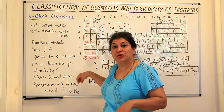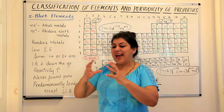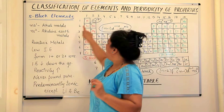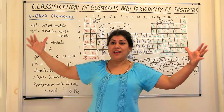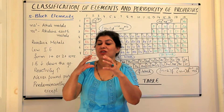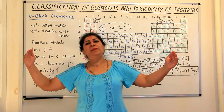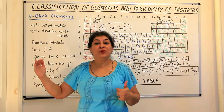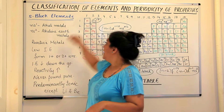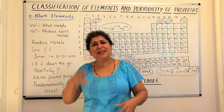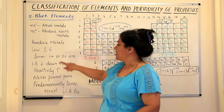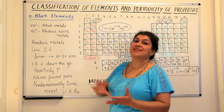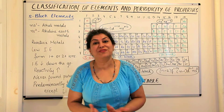As we go down the group, the shell number increases and the principal quantum number becomes larger, so the size of the shell becomes larger. An electron in the seventh shell is much farther from the nucleus than one in the second shell, so it is easier to remove. Therefore ionization energy decreases as you go down these groups — you need lesser and lesser energy to remove one or two electrons. As ionization energy decreases, the ease of removing electrons increases, so the reactivity of these metals increases going down the group.